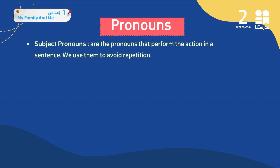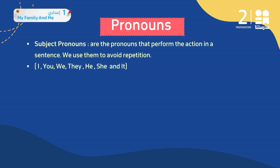Let's explain in detail each kind of pronoun. Number one: subject pronouns. What are subject pronouns? They are pronouns that perform the action in a sentence, and we use them to avoid repetition. Examples are: I, you, we, they, he, she, and it. For example: Mona eats pizza — she eats pizza.